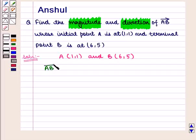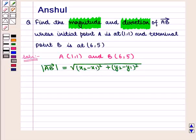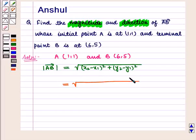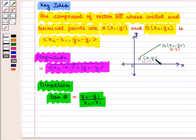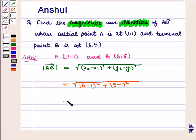The magnitude of vector AB is equal to square root of (x2 minus x1) whole square plus (y2 minus y1) whole square. Here we have taken x1, y1 as (1,1) and x2, y2 as (6,5). So this is equal to square root of (6 minus 1) whole square plus (5 minus 1) whole square, which is square root of 5 squared plus 4 squared.